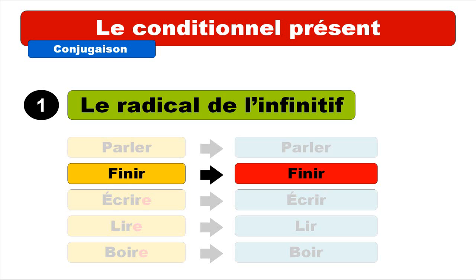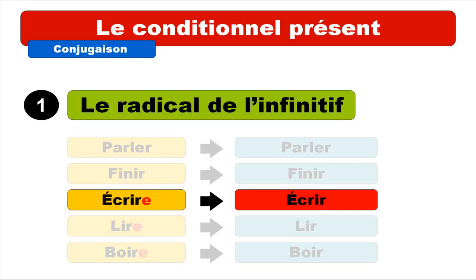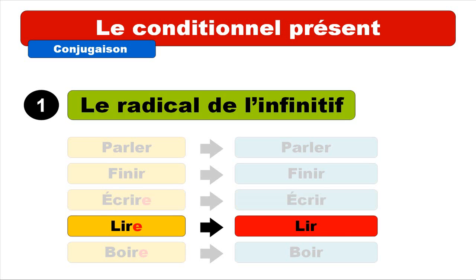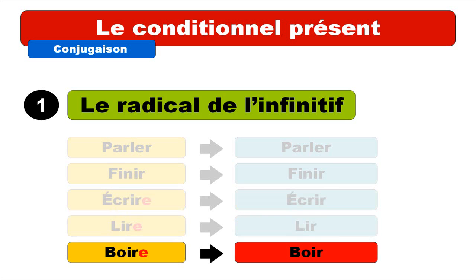For écrire it's a bit different, because you've got the final E, and then you just need to take this E away, and you get écrire. Lire behaves the same way — take the final E away and you get lire. Boire: same thing, just take the final E away and you get boire.